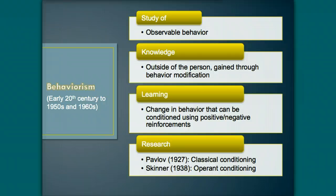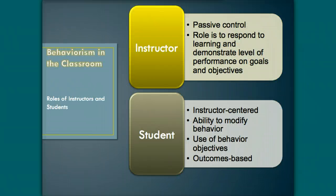Behaviorism is grounded in the study of observable behavior and physical skills, and does not take into consideration the functions of the mind. According to behaviorism, knowledge exists outside of a person and is gained through behavior modification. The theory views learning as a change in behavior that can be conditioned using positive and negative reinforcements, such as rewards and punishment. Behaviorism considers learners more passive in the learning process. The learner's role is simply to respond to the learning content provided by the instructor and to demonstrate a level of performance on specific goals and objectives.